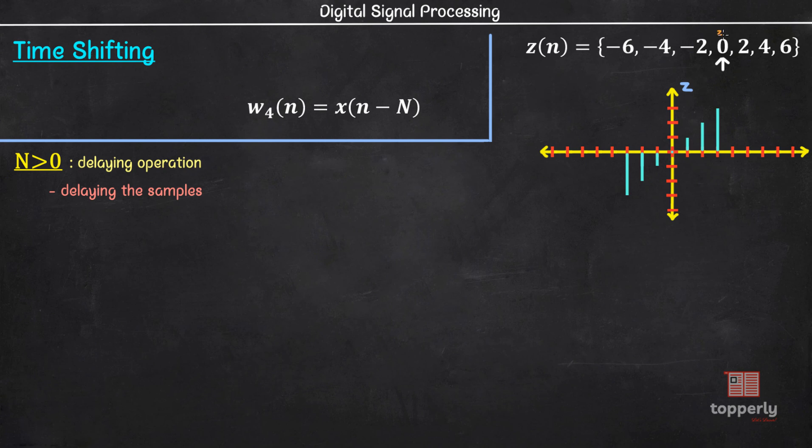Let's see this in action. Consider the sequence z of n and here is how it looks like on a graph. Also, I am indexing each sample for reference. So this is z of 0, this is z of 1, this is z of 2, this is z of 3. Similarly, this is z of -1, z of -2 and z of -3. Now, let's delay this sequence by 2 units. That is, we set N equal to plus 2.